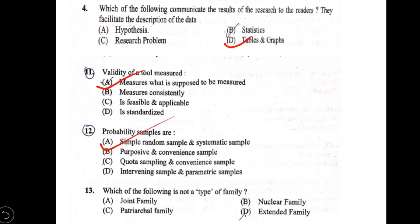Question 13: which of the following is not a type of family? Options: A) joint family, B) nuclear family, C) patriarchal family, D) extended family. Joint family, nuclear family, and extended family are all types of families. Patriarchal family is not a family type — patriarchal and matriarchal refer to society structure. So option C, patriarchal family, is the correct answer.